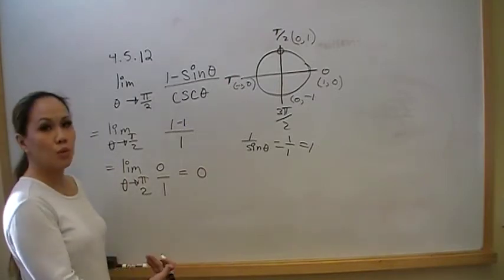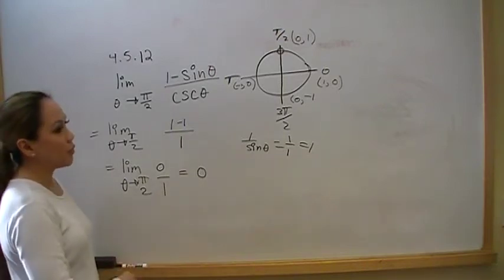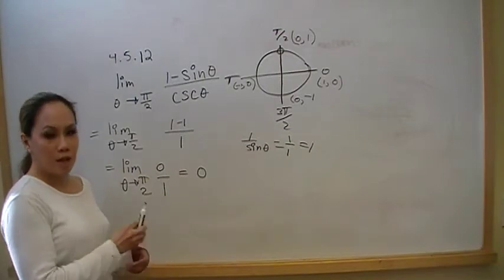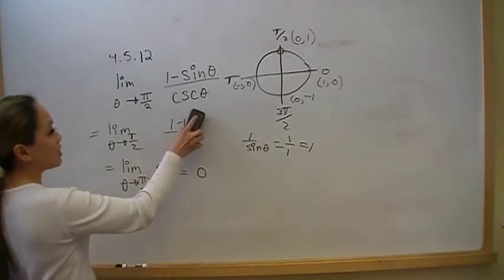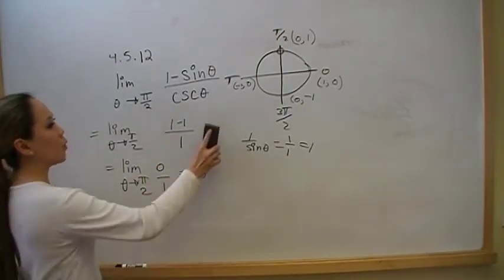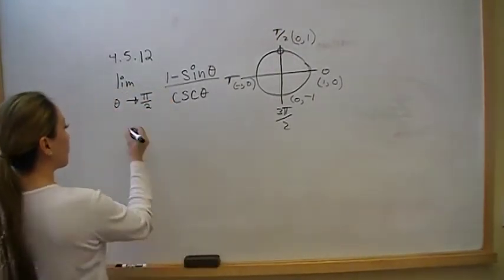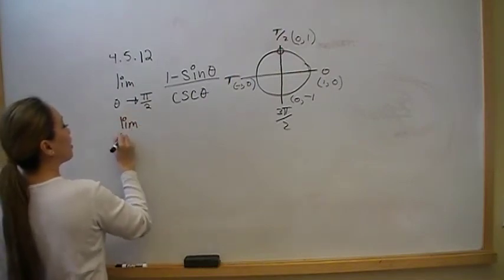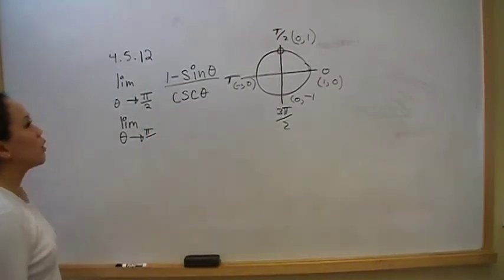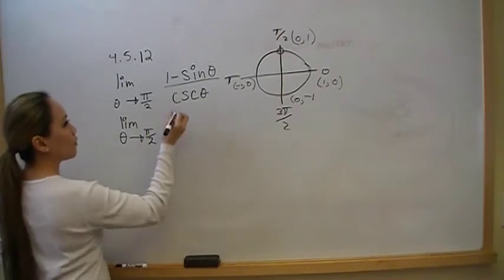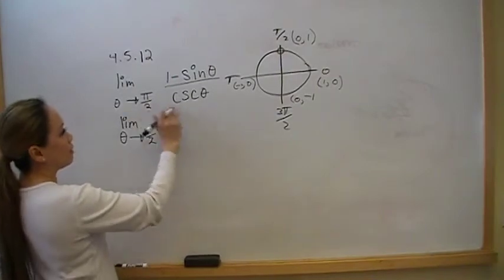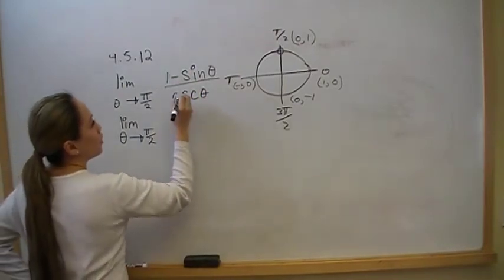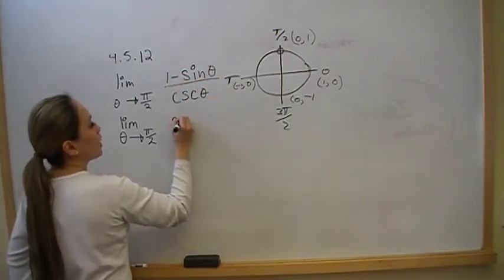In fact, if on an exam you did apply L'Hôpital's rule here, you would get the wrong answer. This is a counterexample showing that L'Hôpital's rule works if and only if your function is an indeterminate form in a quotient fashion. Just to make the point, let's show it doesn't work: taking the derivative of the top — the 1 goes away, derivative of sine is cosine, so we get negative cosine on top.